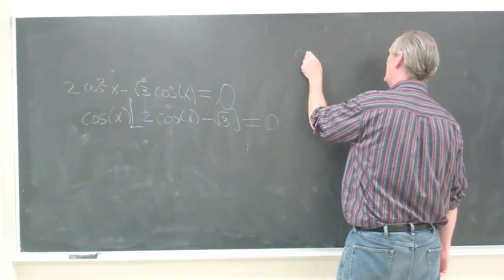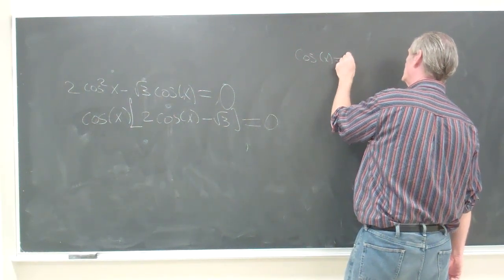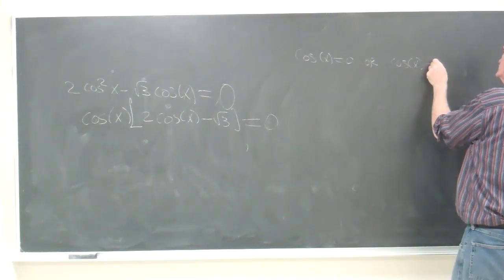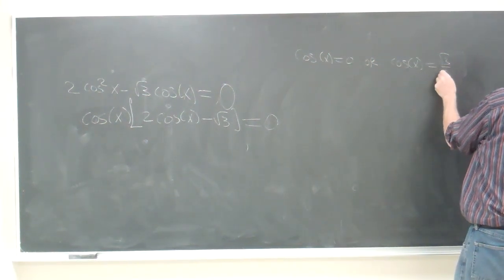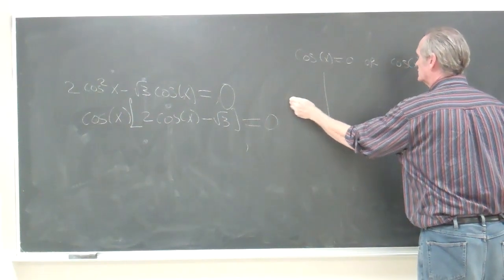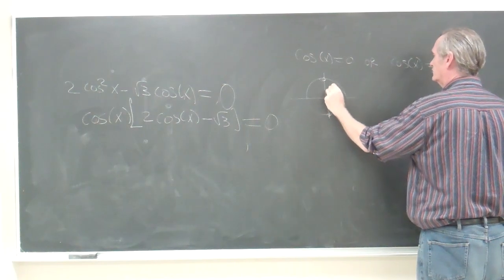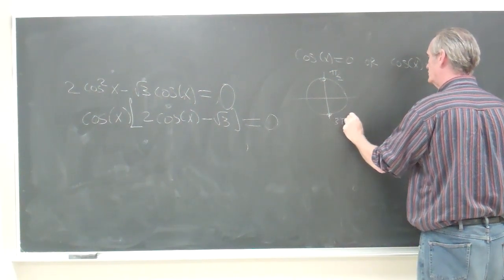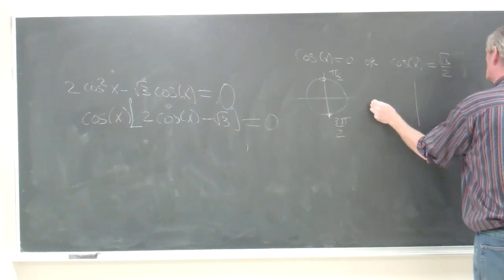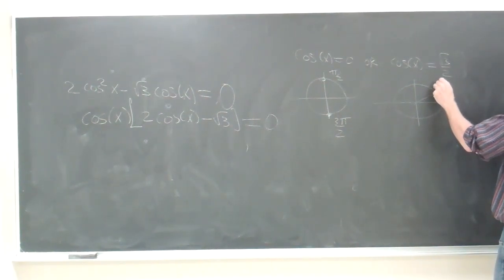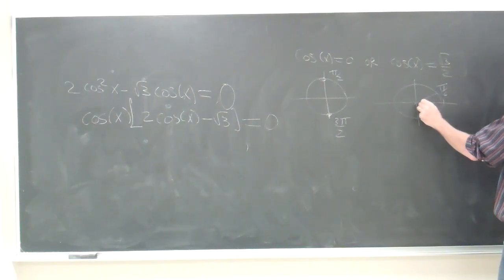So we have cosine of x equals 0 or cosine of x equals radical 3 over 2. Let's remember where cosine is 0: at π/2 and at 3π/2. And cosine of x is square root of 3 over 2 at π/6 and 11π/6.